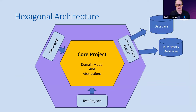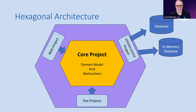This is hexagonal architecture. At the center we have our core project — this is where we have our domain and any abstractions. They call it ports and adapters because you can see things plugging in from the various sides. You've got a web project that refers to the core project, test projects can refer to core, and the infrastructure project — which also manages our data calls — should also go to core. The ports are where you're plugging in and adapters fit those adapters.